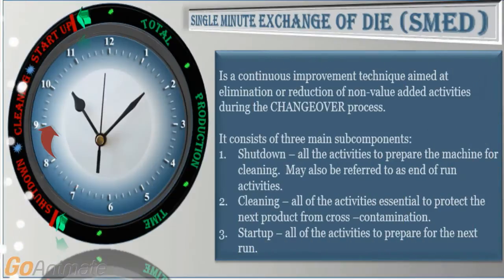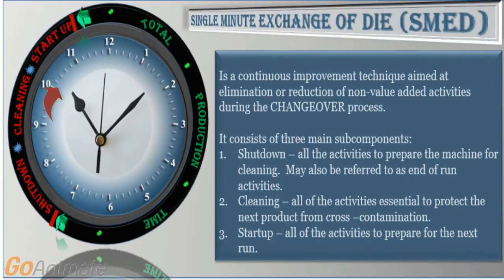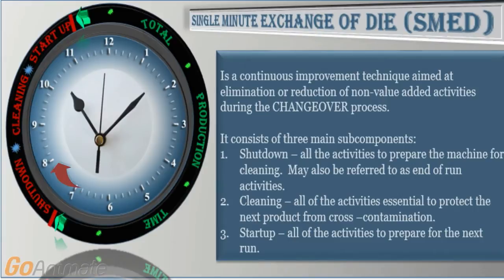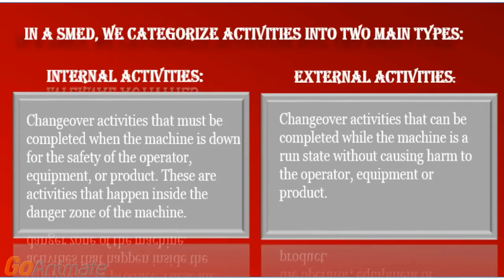It consists of three main sub-components. 1. Shutdown: all the activities to prepare the machine for cleaning, also referred to as end of run activities. 2. Cleaning: all of the activities essential to protect the next product from cross-contamination. And 3. Startup: all of the activities to prepare for the next run.